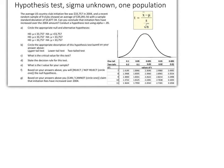Here we have a hypothesis test, sigma unknown for one population. In this case, we're going to have to identify the correct hypothesis statement, so we need to read the background here at the top carefully and see what is being sought. The average U.S. country club initiation fee was $33,757 in 2004. A recent random sample of nine clubs showed an average of $35,091.56 with a sample standard deviation of $3,877.34. Can you conclude that initiation fees have increased over 2004?